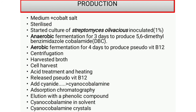The pseudo vitamin B12 is then treated with cyanide to convert it into cyanocobalamin. It undergoes adsorption chromatography and elution with a phenolic compound. After this, the cyanocobalamin is present in the solvent. The cyanocobalamin can then be converted into crystals or as a complex. This concludes the discussion about cyanocobalamin production.